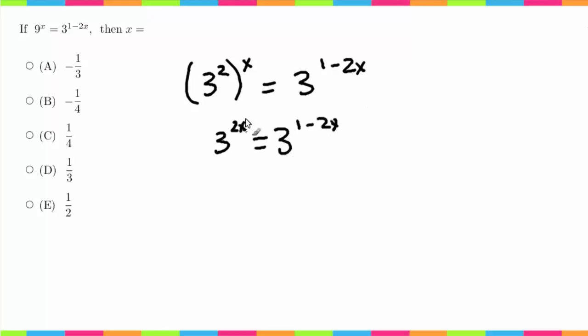Now all we have to do is just set the exponents equal to each other, because obviously 3 to the something power, in order for that to be equal to this, the exponents must be the same, just like 3 to the 2 is going to be equal to 3 to the 2. You can't have different things here for these to equal each other.